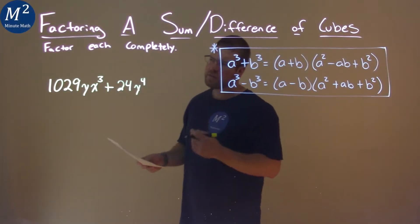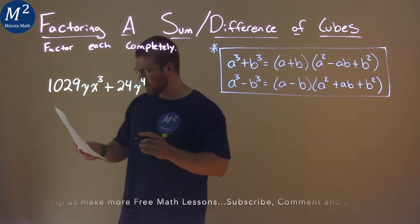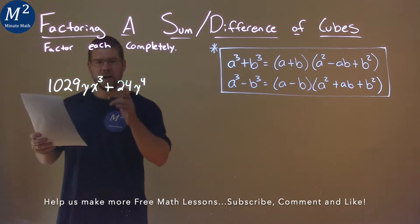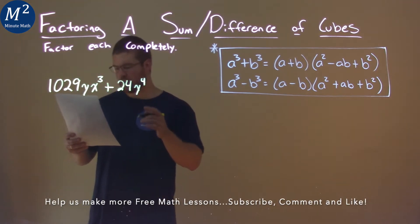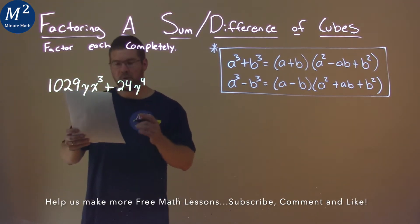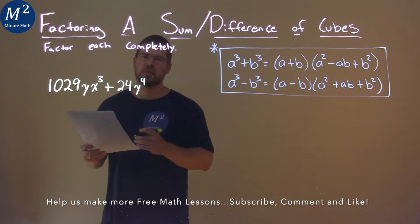We're given this problem right here: 1029yx cubed plus 24y to the fourth power, and we're going to factor this completely.